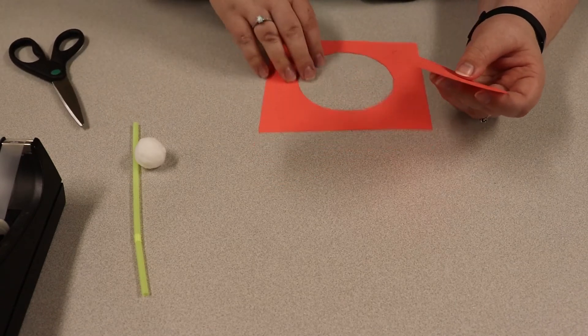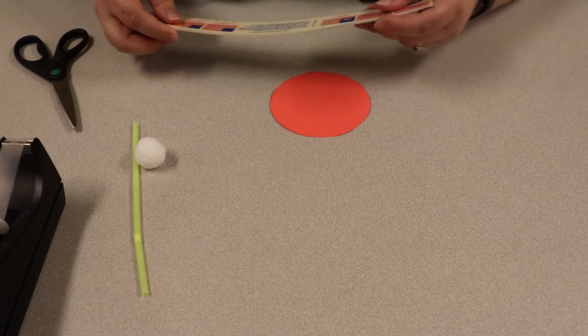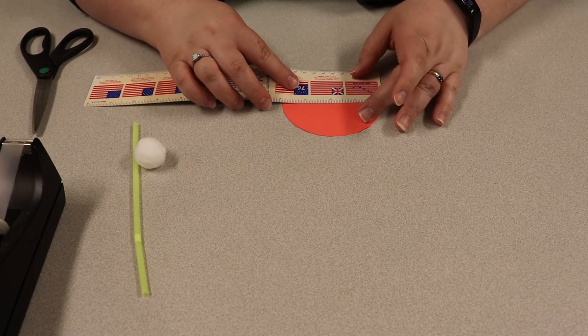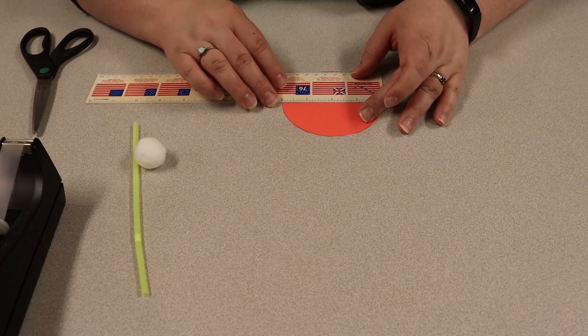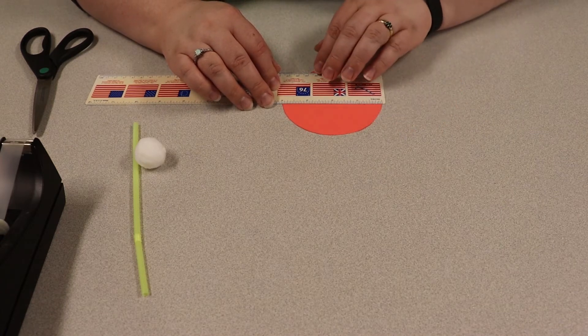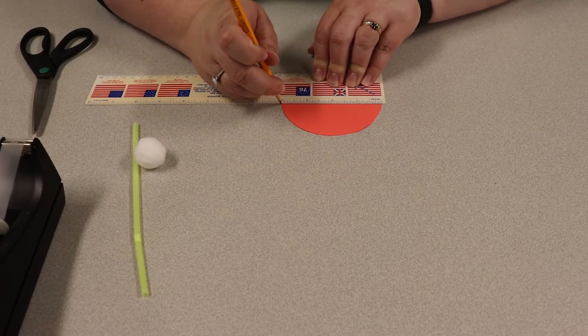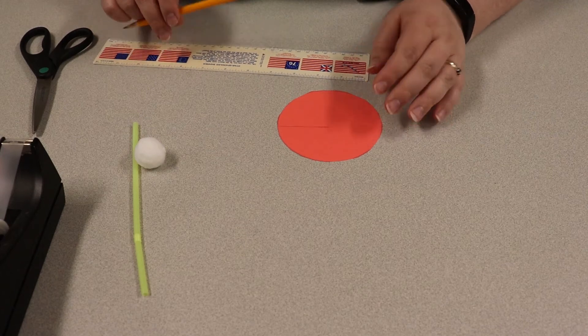Okay, we are then going to grab something that has a straight edge, figure out where our middle is here. This is about a two inch circle that I just drew, however much yours is. We're gonna find the center, draw a brief little line here all the way through, and take a look at it.